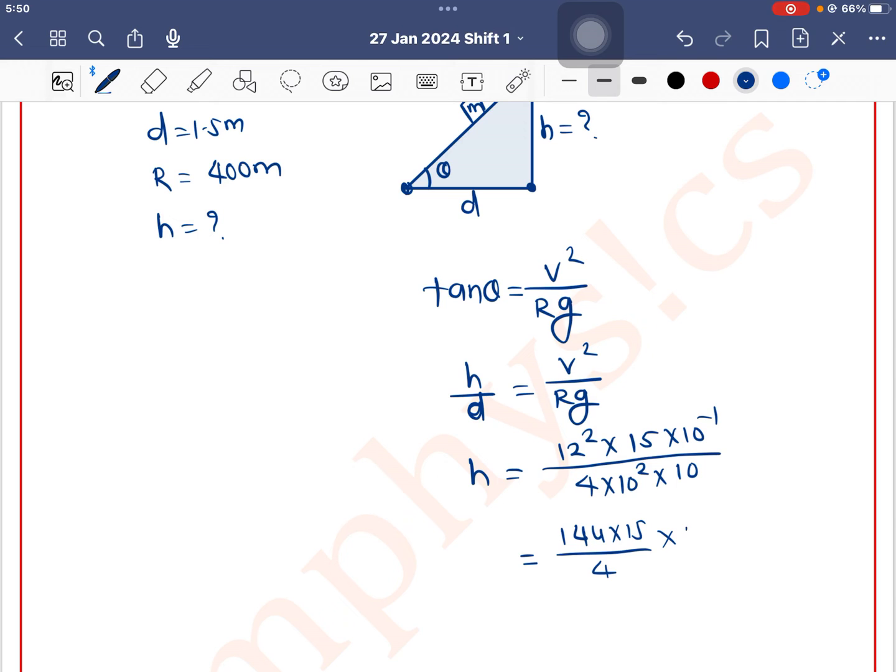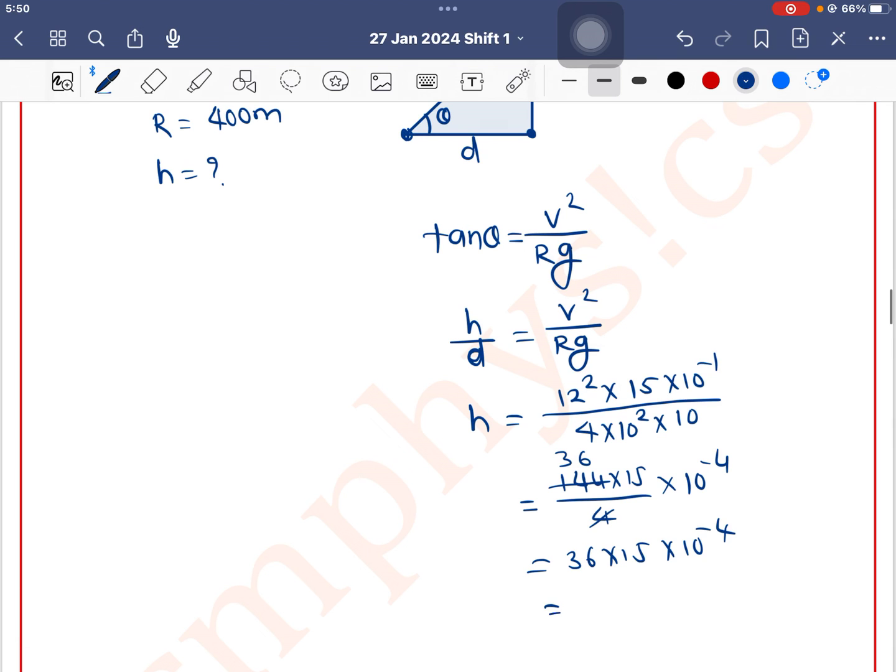The exponents combine to give 10 to the power minus 4. 4 times 3 is 12, and we simplify to get 36 times 15 times 10 to the power minus 4, which equals 540 times 10 to the power minus 4 meters.